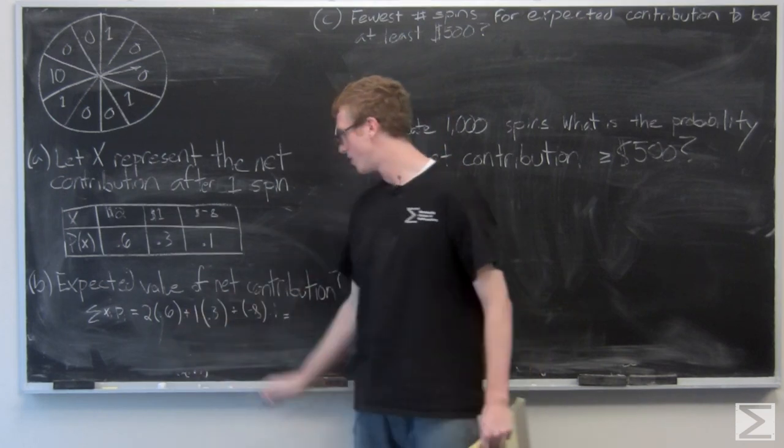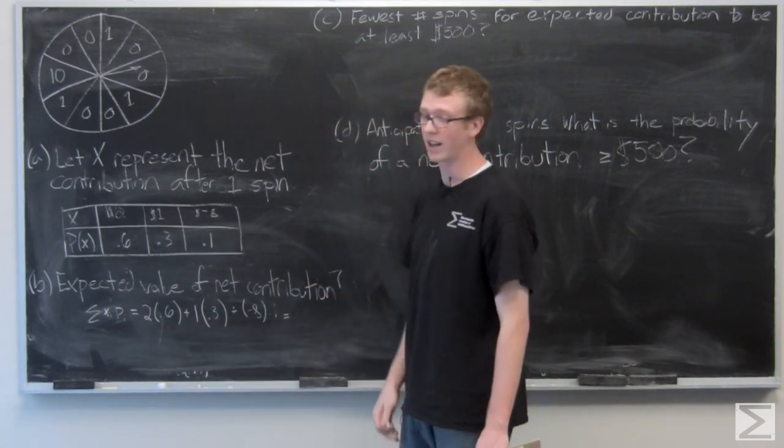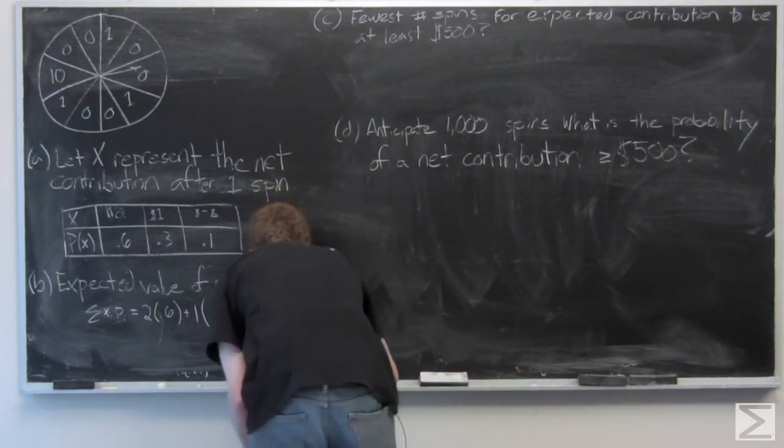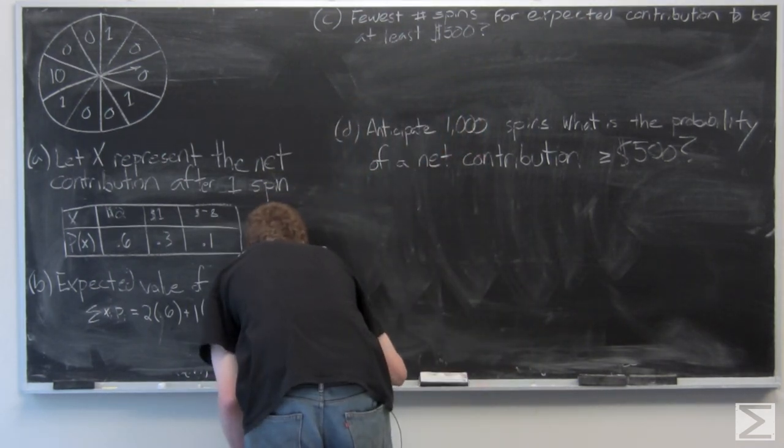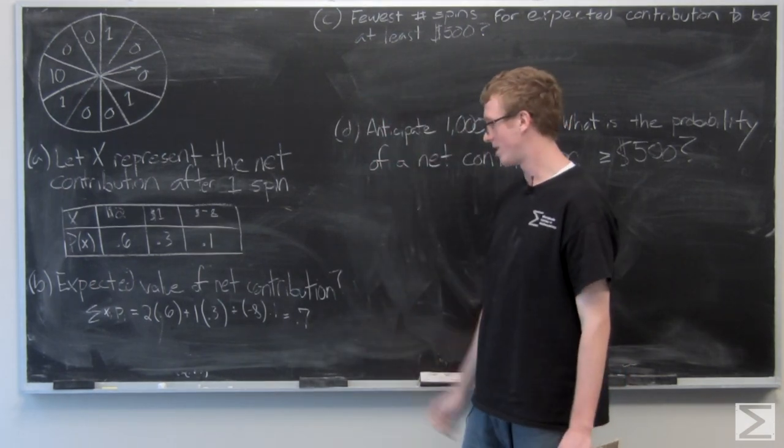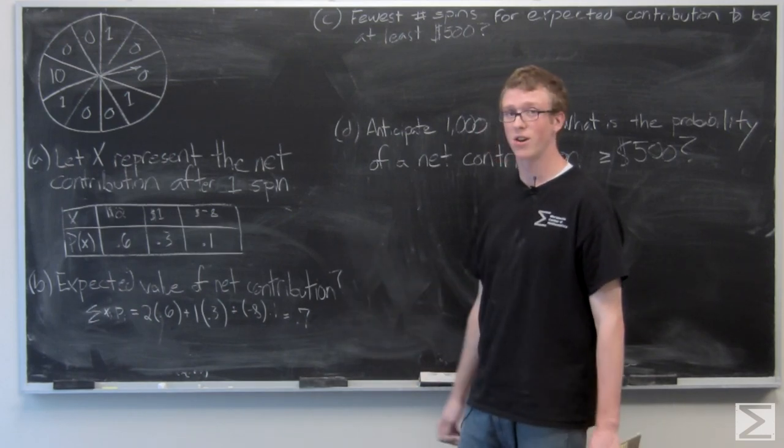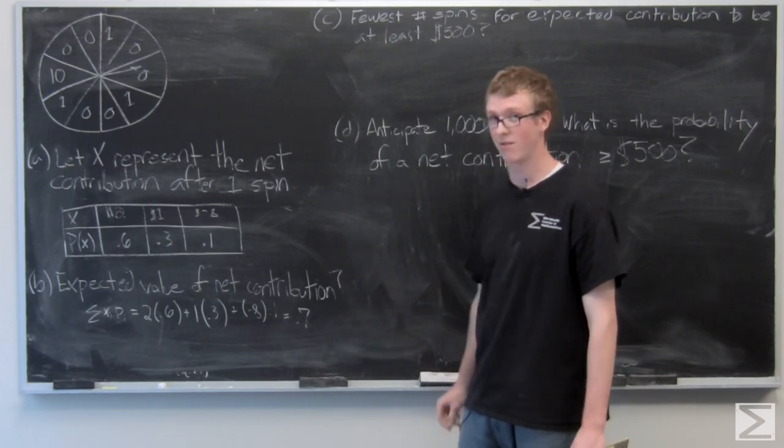So it's going to be 1.2 plus 0.3 minus 0.8 and that's going to be 0.7. This is a positive value, it's in dollars, so it's 70 cents, and the expected value of the net contribution is going to be 70 cents.